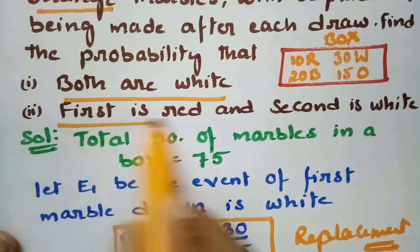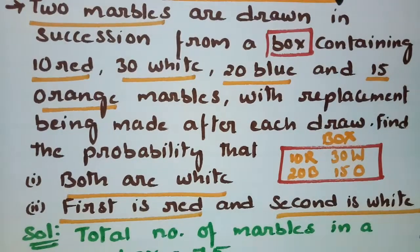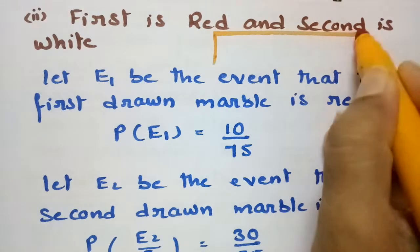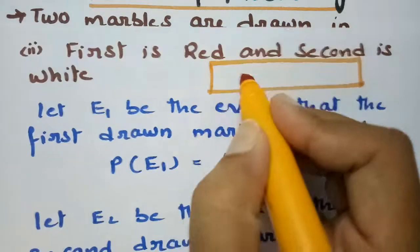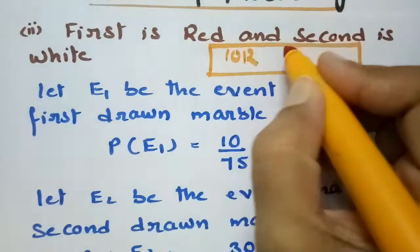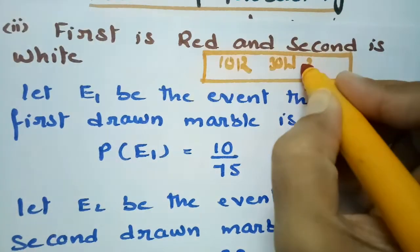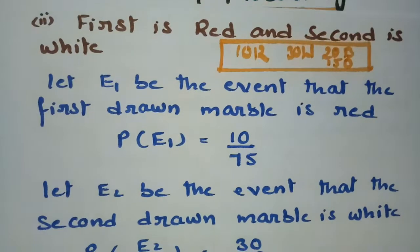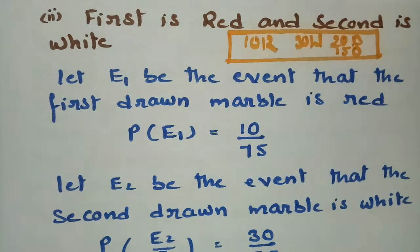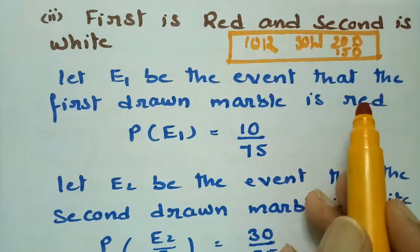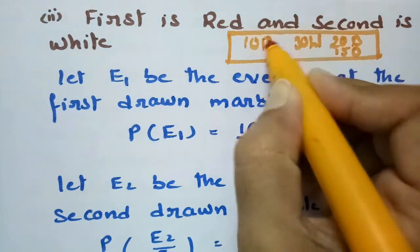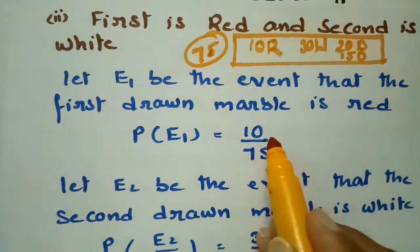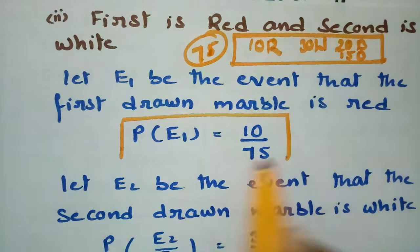For the second question — the first marble is red and the second is white. In the box there are 10 red, 30 white, 20 blue, and 15 orange marbles. Let E1 be the event that the first marble drawn is red. There are 10 red marbles out of 75 total, so P(E1) = 10/75.